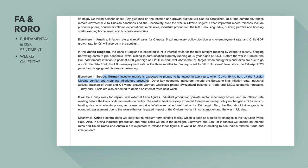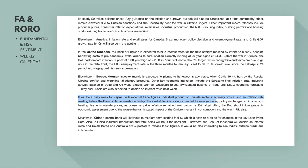Other key European economic indicators include eurozone final inflation data, industrial activity, balance of trade, and fourth-quarter wage growth. It will also be a busy week for Japan, with external trade figures, industrial production, private sector machinery orders, and inflation rate readings. The Bank of Japan meets on Friday and is widely expected to leave monetary policy unchanged amid a record-beating rise in wholesale prices, while consumer price inflation has remained well above its 2% target.